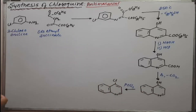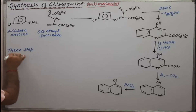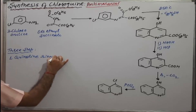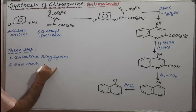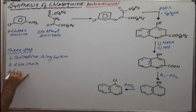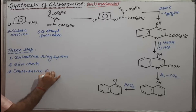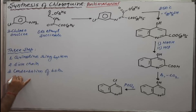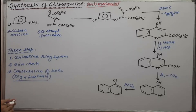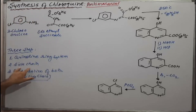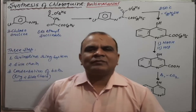In synthesis we will have three steps. First is the quinoline ring system synthesis. Second is the side chain synthesis. Third is the condensation — condensation of both, meaning the ring system and the side chain. We will discuss the synthesis of Chloroquine in these three steps: quinoline ring system formation, side chain synthesis, and condensation of both.